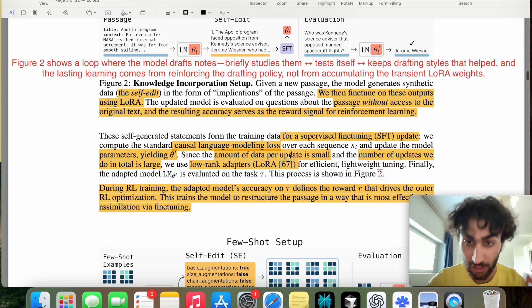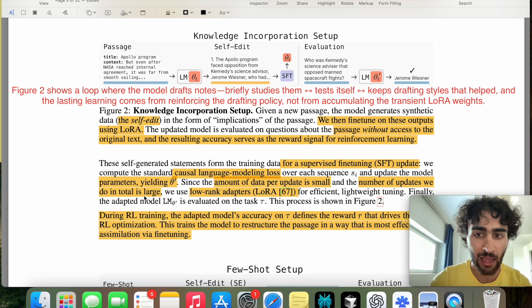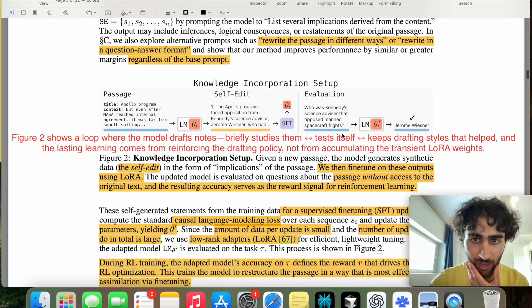Over each sequence and update the model parameters yielding this theta apostrophe. Since the amount of data per update is small, and the number of updates we do in total is large. So literally, this is just the data, it's small, and the number of updates is large, we use LoRa for efficient lightweight tuning. And then the adapted LM is evaluated on task T, so this part here.